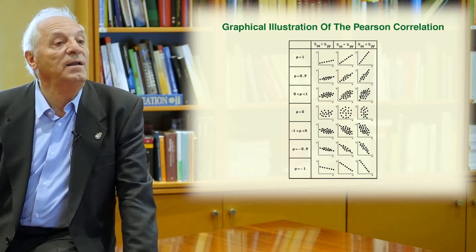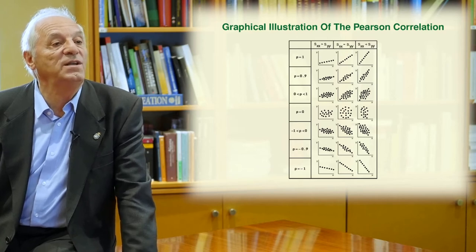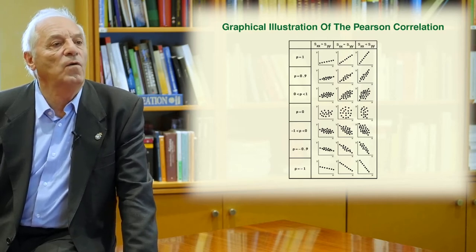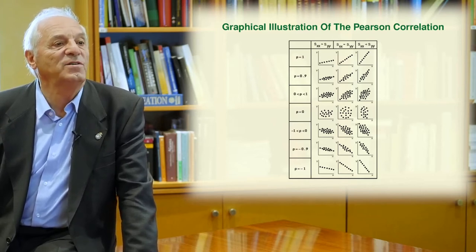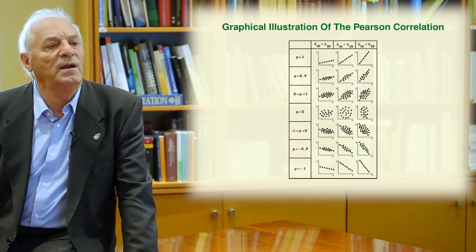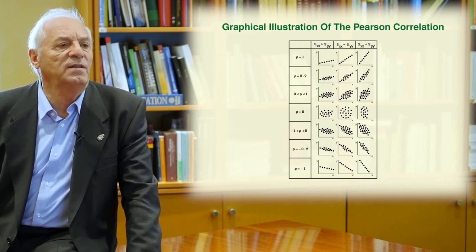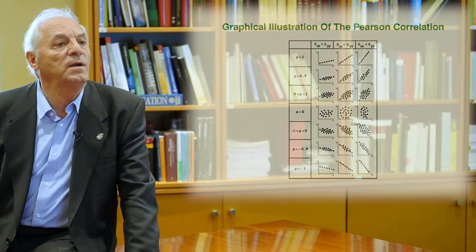And in the middle part, you have rho equal to zero, that means the case of no correlation. And if the value is positive, the trend is positive, the slope of the trend is positive. And if the value of rho is negative, you get trends that have negative slope.